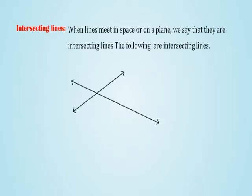Intersecting lines: When lines meet in space or on a plane, we say that they are intersecting lines. The following are intersecting lines.